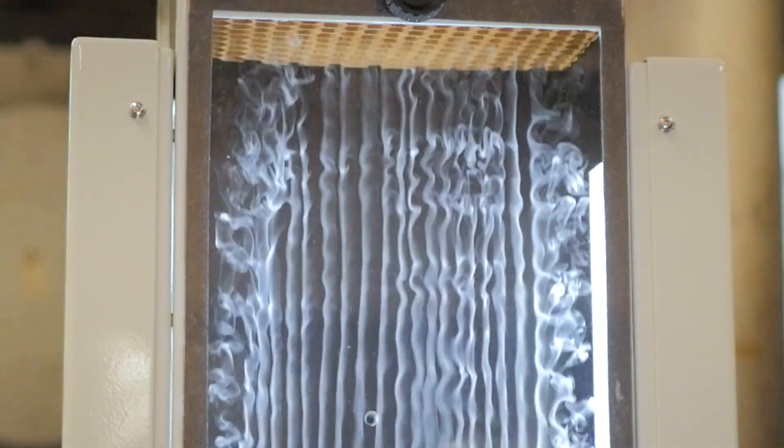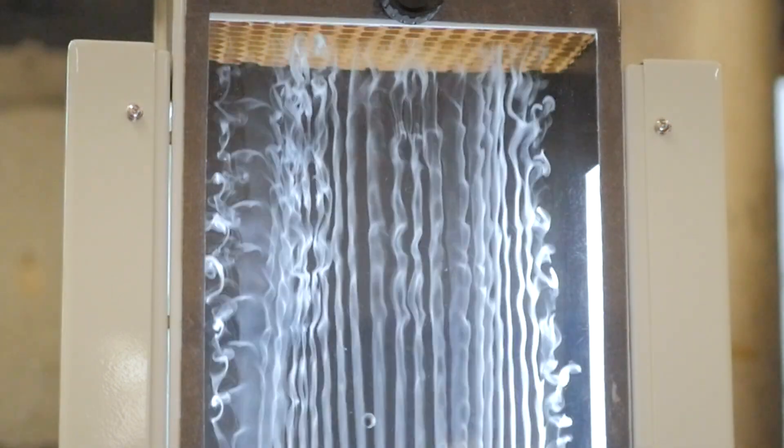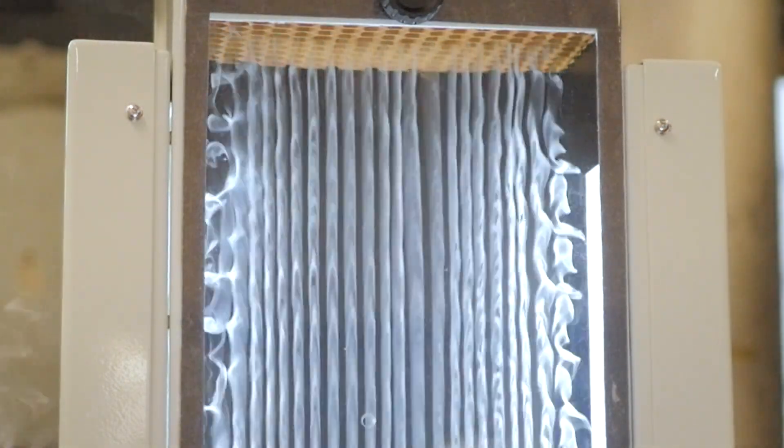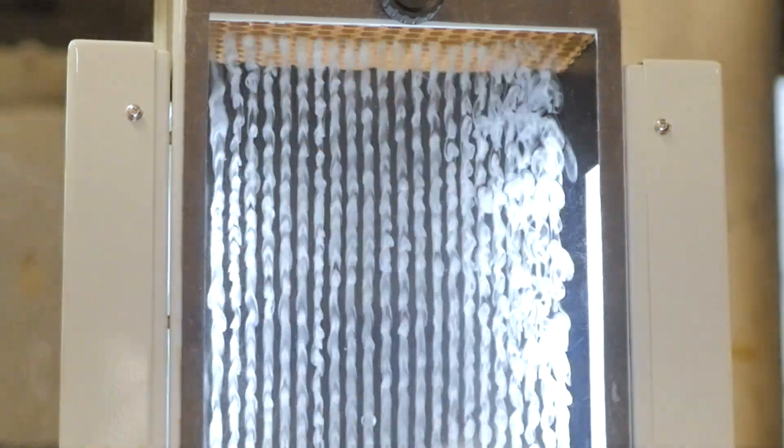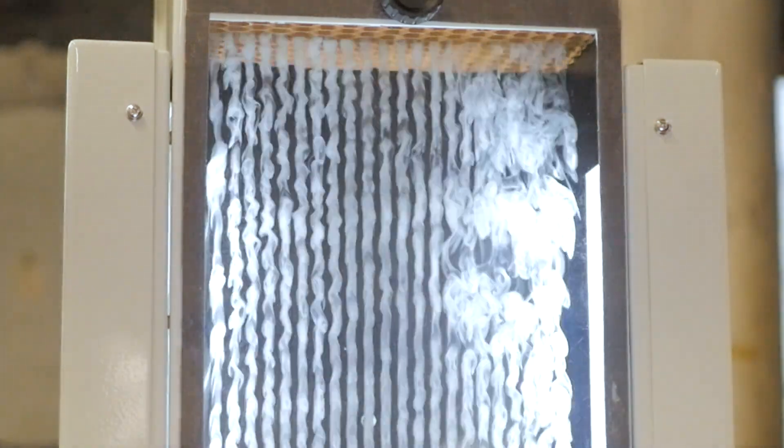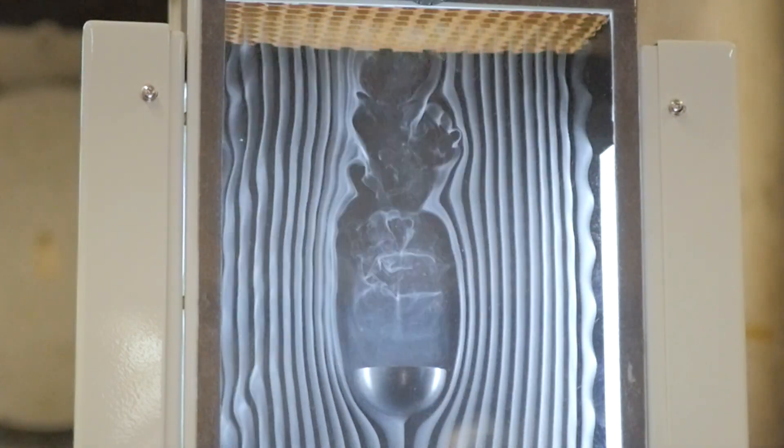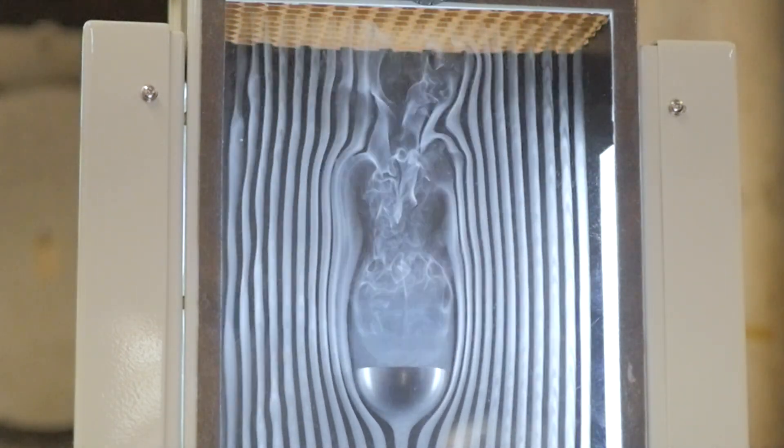Now you can switch on the lights, the fan, and the smoke generator smoke switch. Adjust the fan speed until the smoke trails are clear, a low speed gives better results, then allow the smoke trails to stabilize. Make a note of your results and findings.